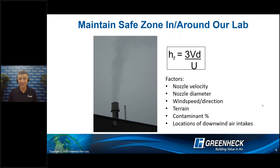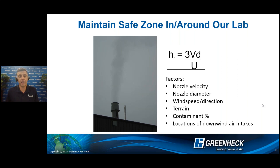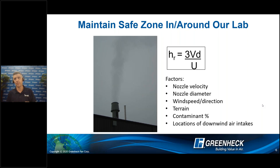ANSI Z9.5 talks about velocity. You'll notice on these systems we have a conical discharge nozzle decreasing the area with the intent to get velocity to 3,000 feet per minute or more. That combination of velocity and stack height helps get the effluent up and away from the facility — making sure we have clean air for researchers. Factors include nozzle velocity, diameter, mass flow, and momentum to get that effluent away. We also consider wind speed, direction, terrain, percent contaminant, and locations of downwind air intakes.